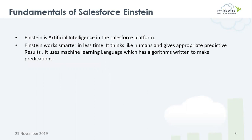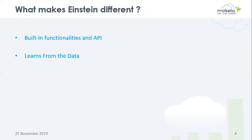We will also cover the Einstein Vision model, what is Einstein Language, and the Einstein Language model. Einstein is artificial intelligence in the Salesforce platform. It works smarter and in less time. It thinks like how humans do and gives appropriate predictive results according to the data we provide.